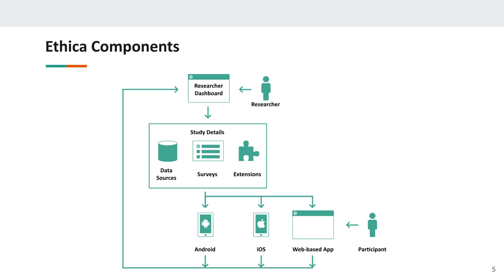If you're interacting as a participant on one hand and a researcher on the other, you should use different email addresses so the two aren't mixed up — there are privacy issues with this. As a researcher you'll want to use a different email address than the one you used as a participant. Keep them separate because Ethica will use both in different contexts.